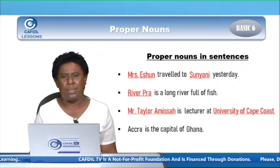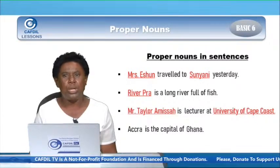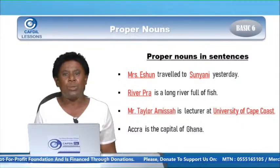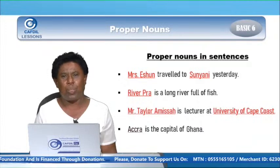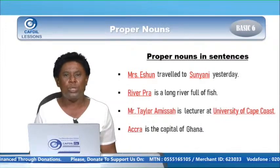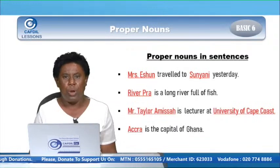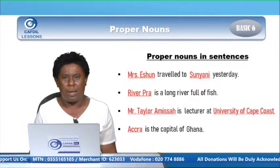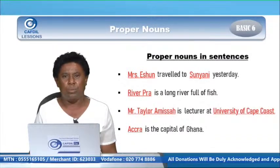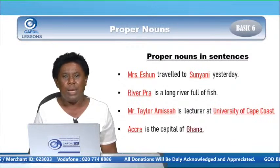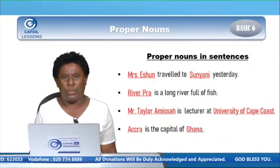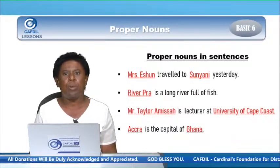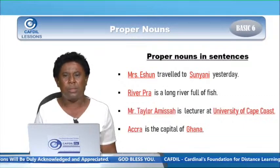Now in the next sentence: Accra is the capital of Ghana. Let's underline the proper nouns in the sentence. Accra begins with capital A, because it's a particular name given to the capital city of Ghana. Accra is a proper noun, it begins with capital A. And Ghana is a country we are in — a particular name given to a country, starts with capital G, and it's a proper noun.